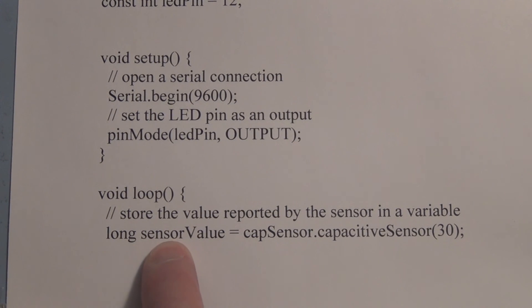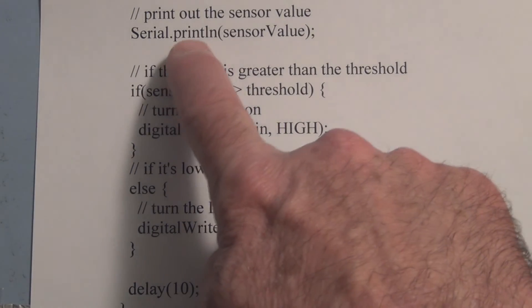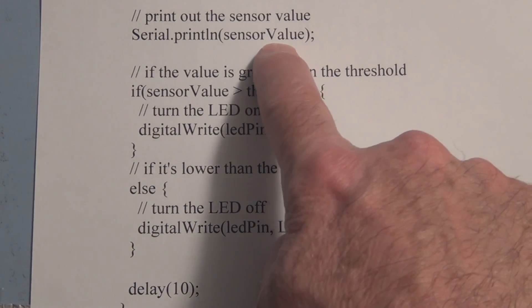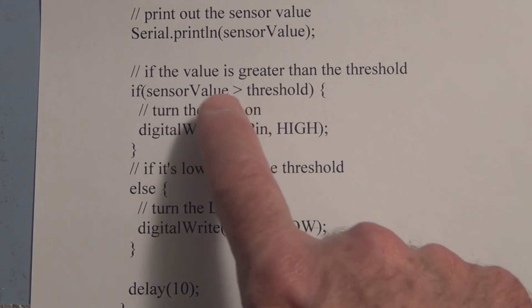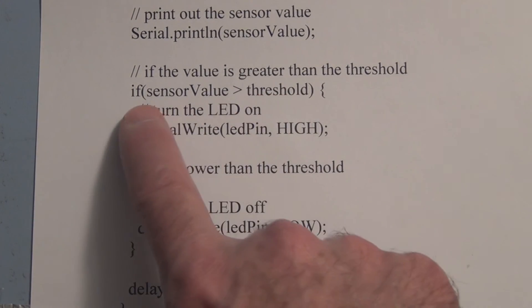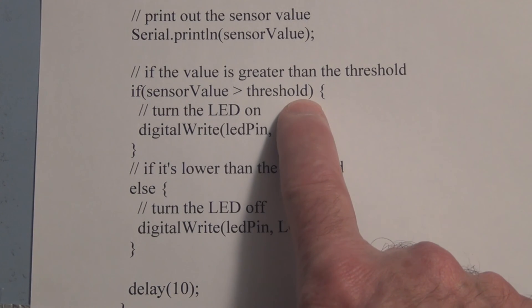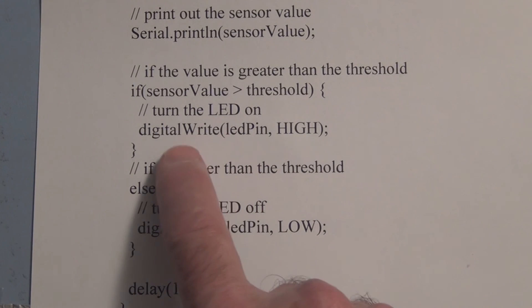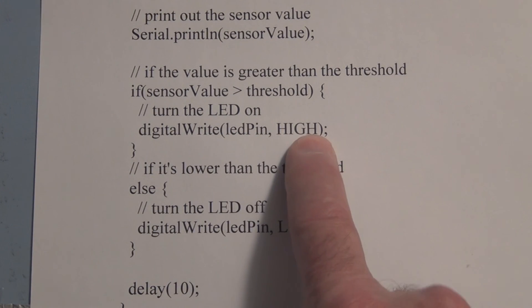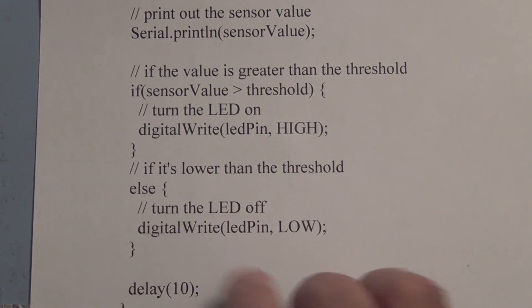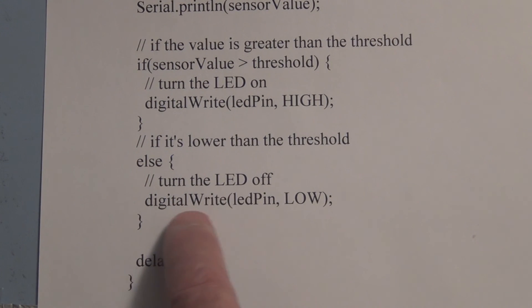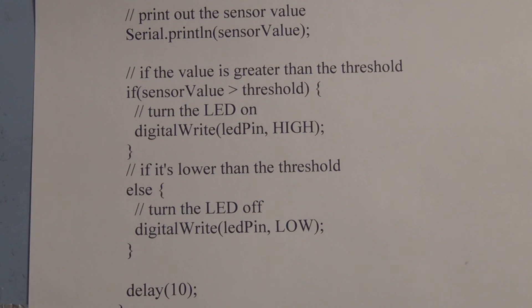So this function is going to return a value and store it in variable sensor value. Here we're going to do a serial print on a new line the sensor value. And here we're going to compare the sensor value to our threshold. So if sensor value is greater than our threshold, we're going to turn the LED on, digital write LED pin high. If it is lower than our threshold, we will turn the LED off, digital write LED pin low. We're going to insert a delay here of ten, and that's it.